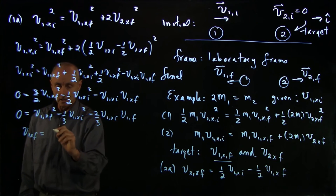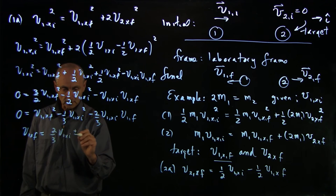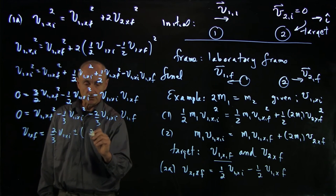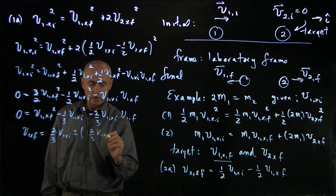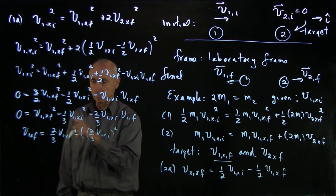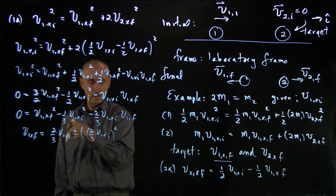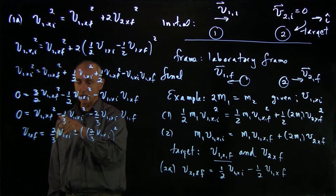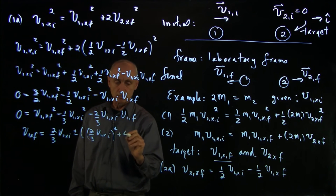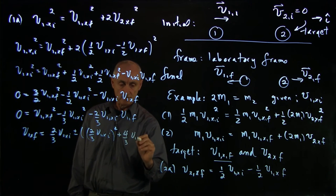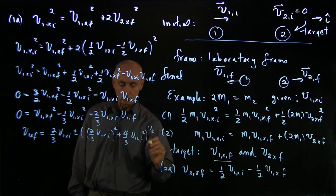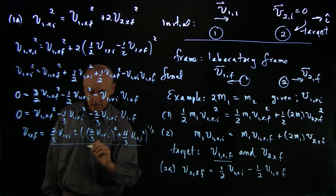Negative b is plus 2/3 v1x initial, plus or minus. We're going to interpret those two roots in a moment. We have the factor 2/3 v1x initial squared minus 4ac. So that's another minus sign with a plus. That's plus 4/3 v1x initial squared, all to the square root, and everything divided by 2.